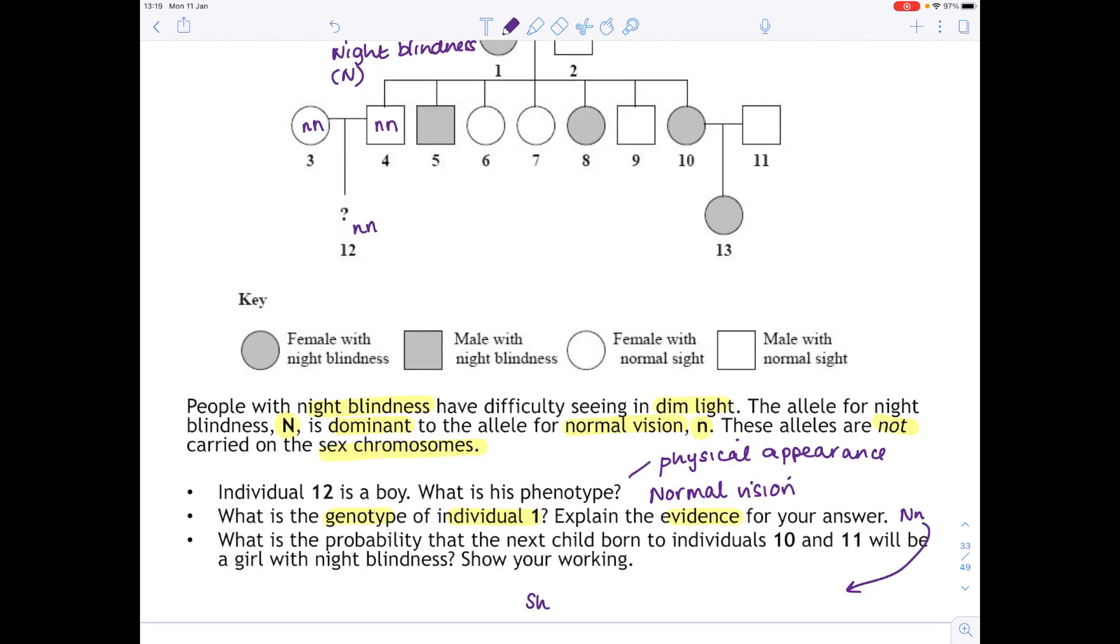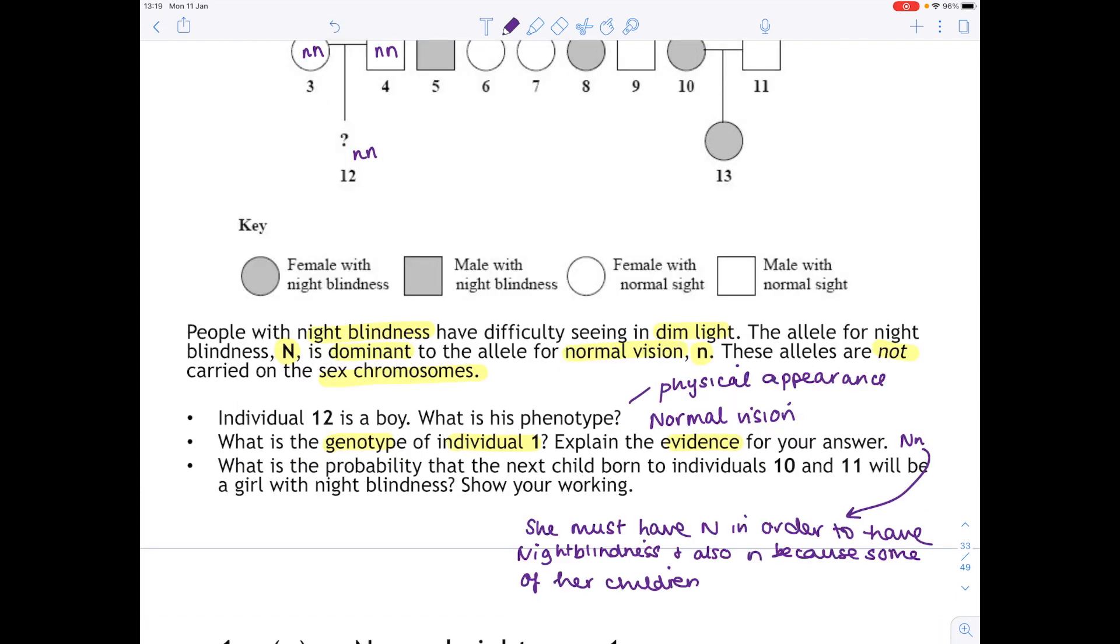So she must have a capital N in order to have night blindness and also a lowercase n because some of her children have normal vision. Make sure you write that down because I'm now going to rub it out so we can write the third answer nice and easily without getting muddled.